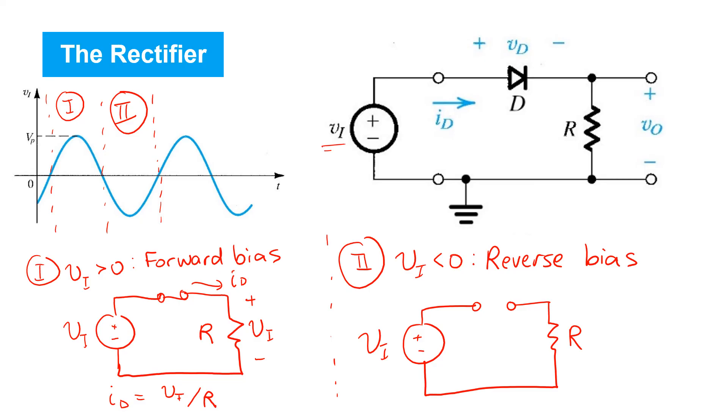In this case, there is no current flowing through the open circuit. As a result, there is no voltage drop across the resistor.